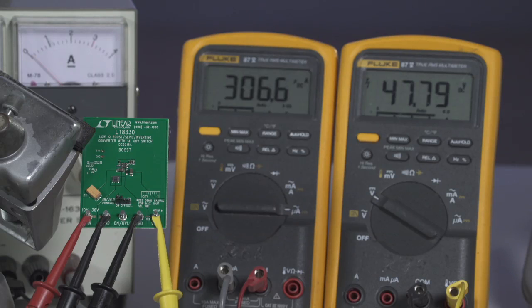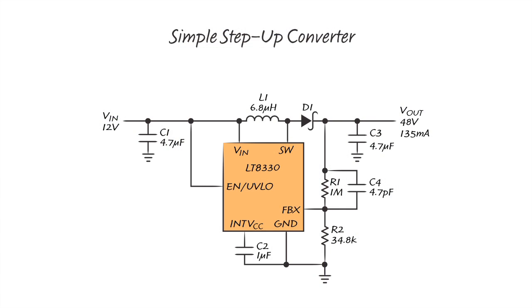The LT8330 is a very versatile, easy-to-use monolithic converter that can be used for a variety of topologies, such as Boost, SEPIC, or Ćuk.